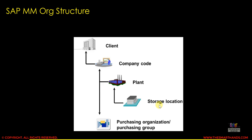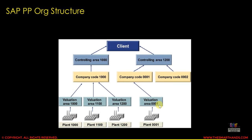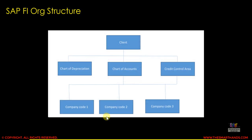This is the production planning org structure: on top we have a client, under client we have controlling area, under controlling area we have company code, under company code we have valuation areas, and under valuation areas we have plants. In financial accounting, on top we have a client, under client we have charts of account, under charts of account we have company code. The point to be noted is that company code is one of the most common org units among all the modules.